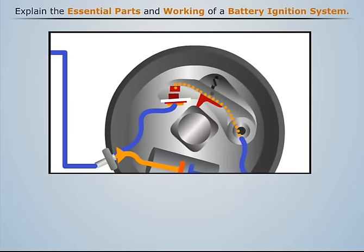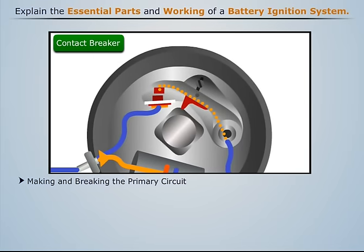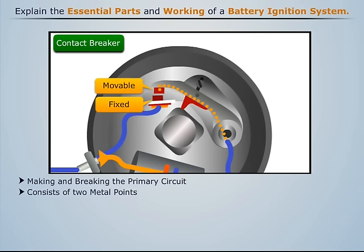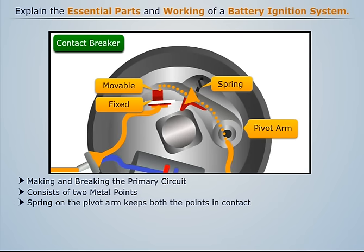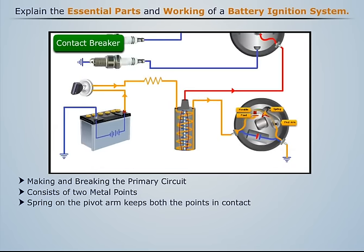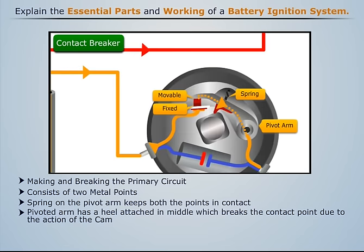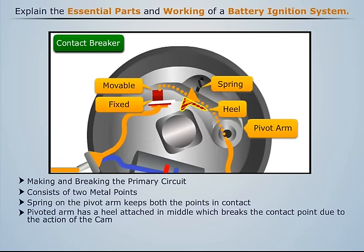The contact breaker is a mechanical device for making and breaking the primary circuit. It consists of two metal points — one fixed and the other movable. While the fixed metal point is connected to the contact breaker assembly, the movable one is connected to a spring-loaded pivot arm. The spring on this arm keeps both metal points in contact, thereby closing the primary circuit. The pivoted arm has a heel attached in the middle, which rests on the cam driven by the engine.